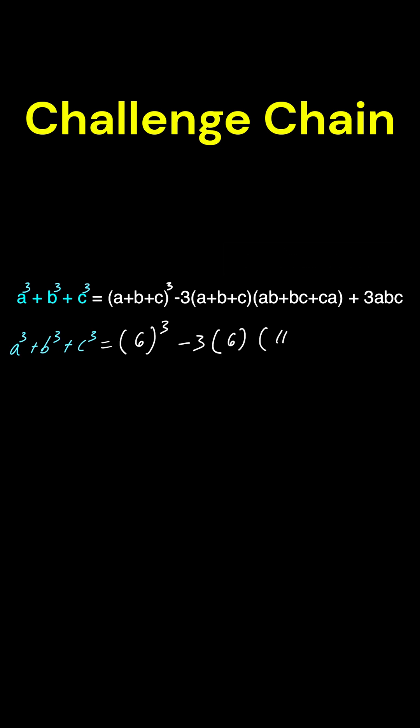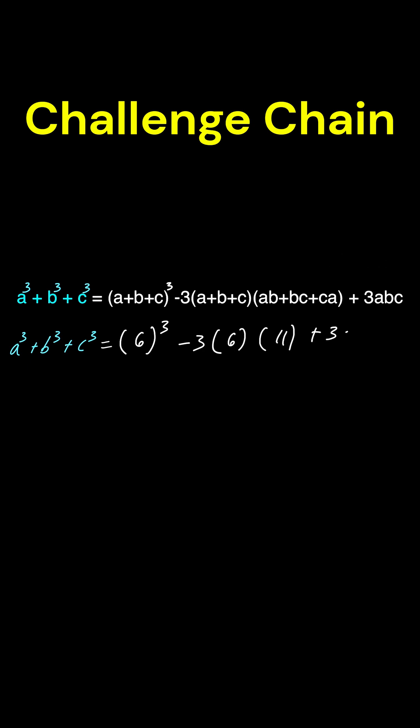He tells us that ab plus bc plus ca equals 11, so over here we'll put 11. And then he tells us that abc equals 6 — 3 times 6.